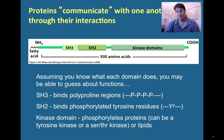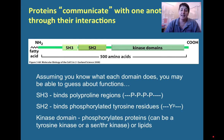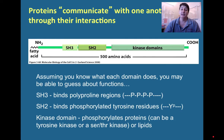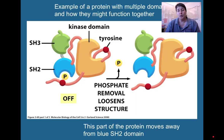Remember, proline has that special bond that causes kinks, and the SH3 domain recognizes that kink in a protein. SH2 domains bind to phosphorylated tyrosine residues in a particular sequence of amino acids. There are many different SH2 domains and many different sequences of phosphorylated tyrosine. And a kinase is an enzyme that phosphorylates another protein. So if we take a look at this particular protein and it folds up into this shape...